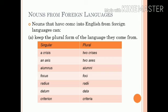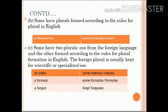Finally, we will discuss nouns that have come into English from foreign languages like Greek, Latin, etc. There are three rules for plural formation. Rule A: Certain nouns keep the plural form of the language they come from — for example: crisis, axis, alumnus, focus, radius, datum, and criterion. Rule B: Some have plurals formed according to the rules for plural in English — for example: thesaurus. Rule C: Some have two plurals, one from the foreign language and one formed according to English rules; the foreign plural is usually kept for scientific or specialized use — for example: index, formula, and fungus.